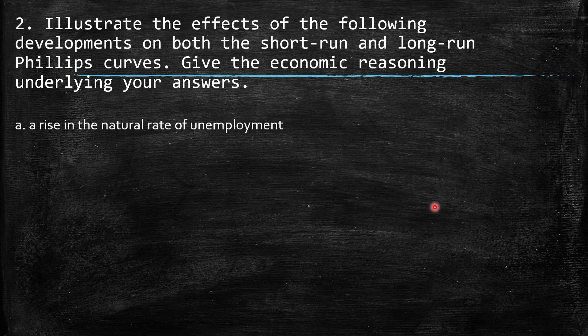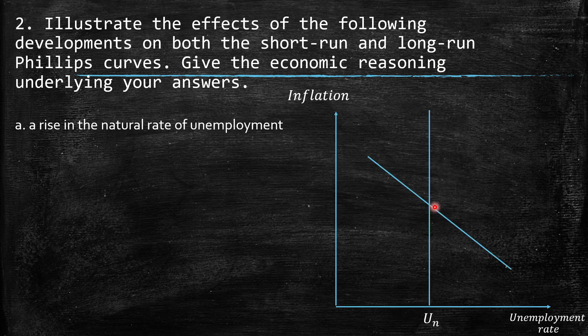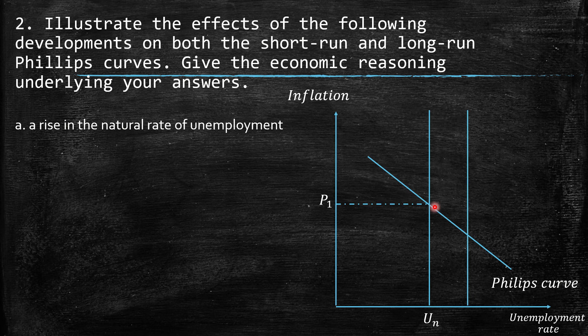Second: illustrate the effects of the following developments on both the short-run and long-run Phillips curves. A: a rise in the natural rate of unemployment. This is based on structural changes — for example, if you're thinking about more people due to migration inside the country, naturally the natural rate will be higher. So if we start from the situation of P1, where prices and unemployment were at equilibrium, it's going to move to the right, where the natural rate will be higher and prices will be lower.